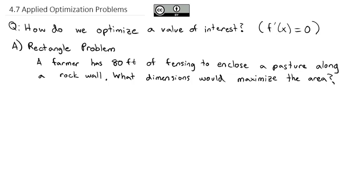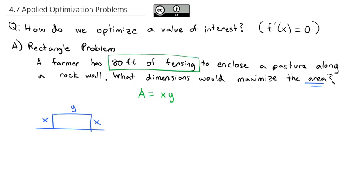Let's draw a picture to see what's going on. We've got this rock wall already, and the farmer is going to make a fence that goes alongside that rock wall, so he's really only fencing three sides. We need to give variables to the sides as we calculate the area, because that's what we want to maximize. We'll say it's an x by y fence, which means the other parallel side is also x. The area of any rectangle equals length times width, or in this case x times y. But that gives us two variables, so we need to constrain one of them to reduce down to one variable.